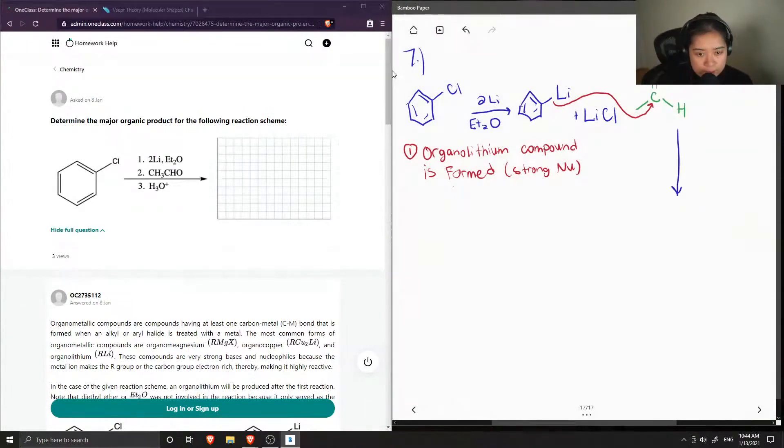And then we get the following intermediate, which now has the negatively charged oxygen. This hydrogen stays the same. And then this is the methyl group that was in the acetaldehyde. And then I'll just show that this negative charge is stabilized by a positively charged lithium ion.